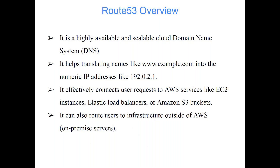The same thing applies here. gmail.com, google.com, or netflix.com — those are only for our convenience. Behind the scenes, there is one IP address, and the IP address is linked with that domain name. DNS — the Domain Name System — maintains the linking between your website's name, or domain name, and the corresponding IP address. It helps translate names like www.example.com into numeric IP addresses, and effectively connects user requests to AWS services like EC2 instances, load balancers, or Amazon S3 buckets.